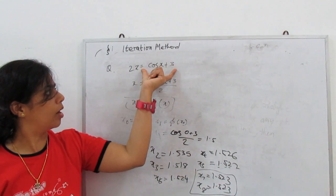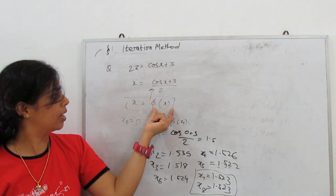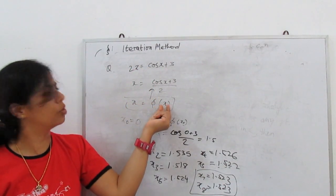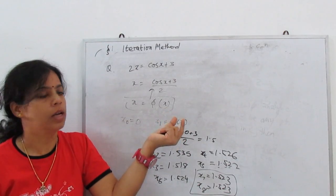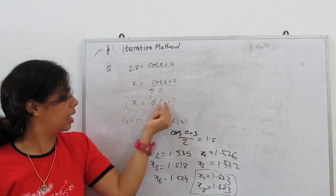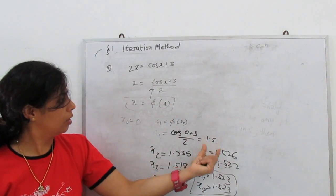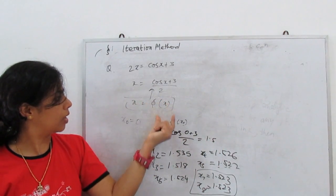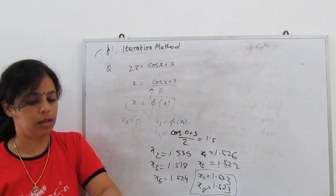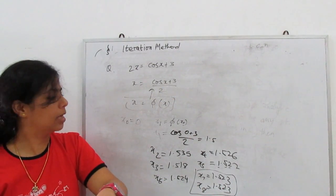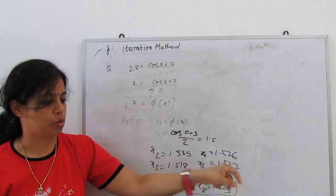We arrange our given function in the form x = φ(x) and substitute. Start with x = 0 or x = 1, or whatever value suits the equation, then substitute. Whatever result comes is x₁; then x₂ = φ(x₁), x₃ = φ(x₂). Substitute and find the solution. You can also make a table.